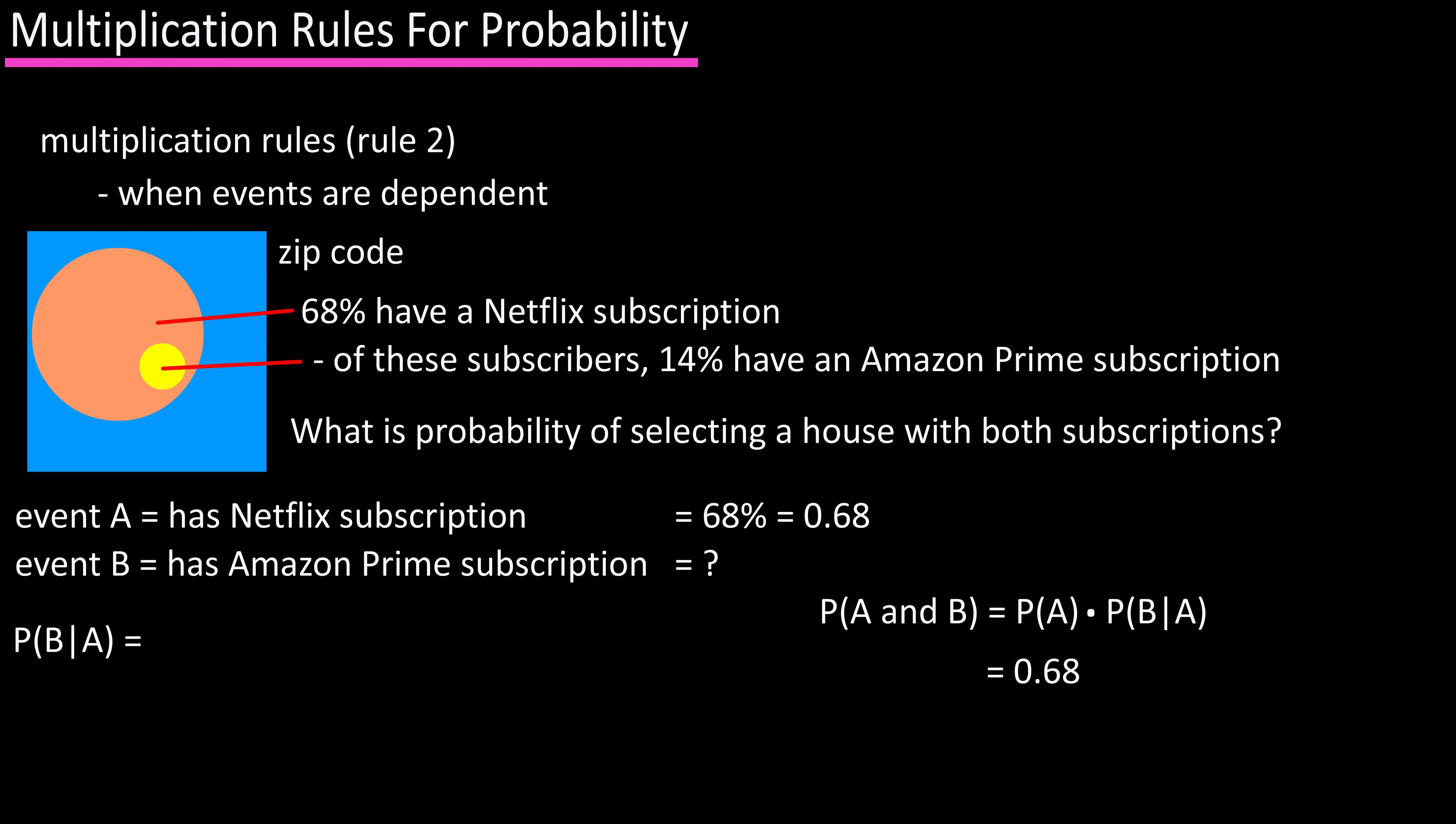The probability of B given that A has already occurred means the probability that a home has an Amazon Prime subscription given they have a Netflix subscription, which is 0.14, or 14%. So multiplying these, we get 0.095, or a probability of 9.5% that a randomly selected home has both Netflix and Amazon Prime.